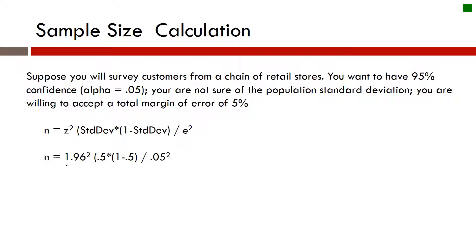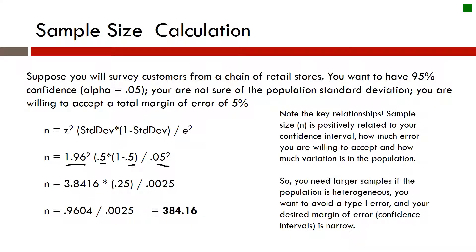We have 1.96 squared. We have 0.5, and then we have 0.5 in there, and then we have 0.05 squared. And so we'll just simply calculate that out. We end up with a sample size of 384. That would be the sample that we need in order to do this.